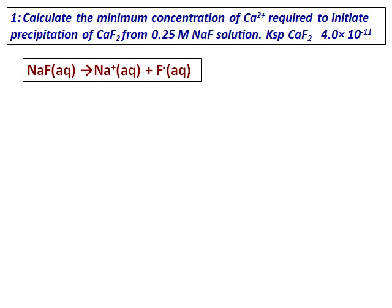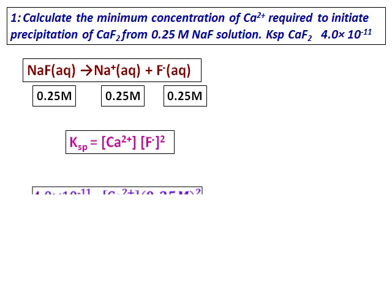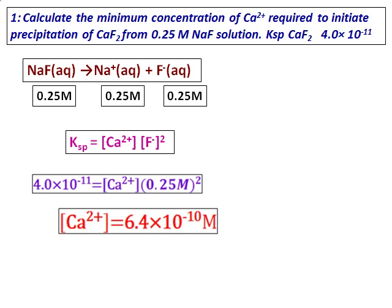First, we should know how much fluoride ion is present. Sodium fluoride will ionize completely because salts of sodium dissolve completely in water, and I get the concentration of fluoride ions as 0.25 molar. Now I know the concentration of fluoride ion. Therefore, write down the solubility product equation. I have the value of the solubility product and the value of fluoride ions, then substitute the values and get the concentration of calcium ions.